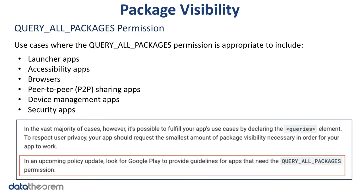The QUERY_ALL_PACKAGES permission is a newly introduced permission. Google recommends using the queries tag in the manifest instead, as this permission provides excessive access not needed by most apps. Only apps in specific categories — such as file explorers, device management, and security apps — really need it. Using it allows developers to get a list of all installed packages, but apps that can't justify usage may get blocked from the Play Store during the review process.